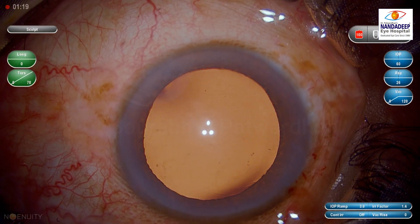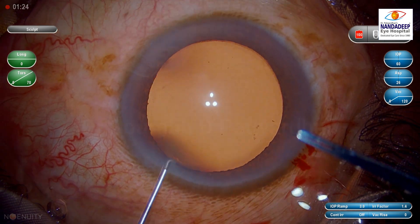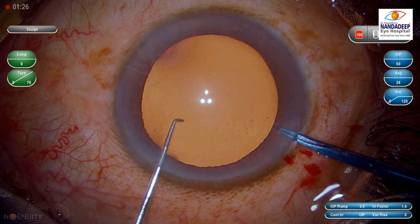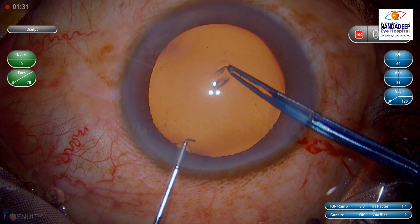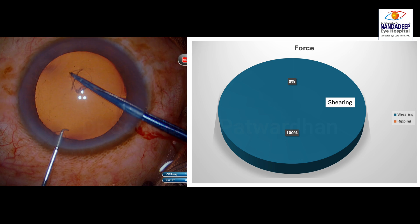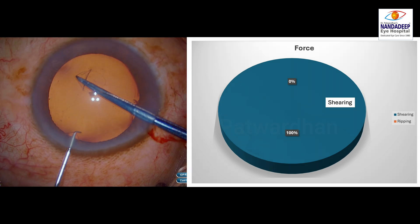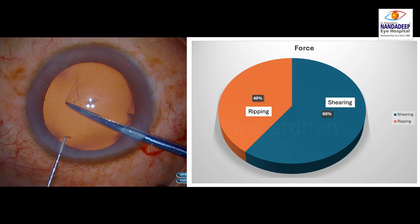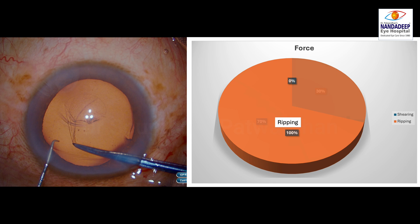Now let's watch the same clip again, split into smaller clips. I start the capsular axis using a capsular axis forceps and make the first nick. I have started pulling the tear, and if you watch it closely in slow motion, initially I am using almost 100% shearing force as my movement is parallel to the tear. As I move without re-grasping, the direction becomes more and more perpendicular until it becomes 100% ripping force.